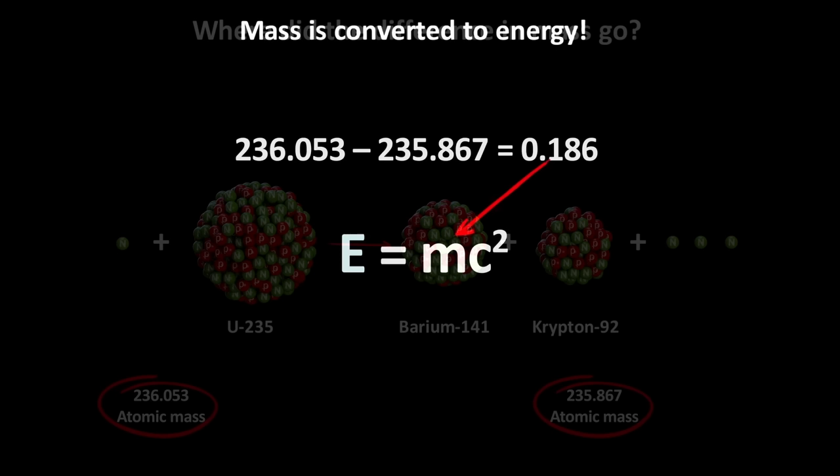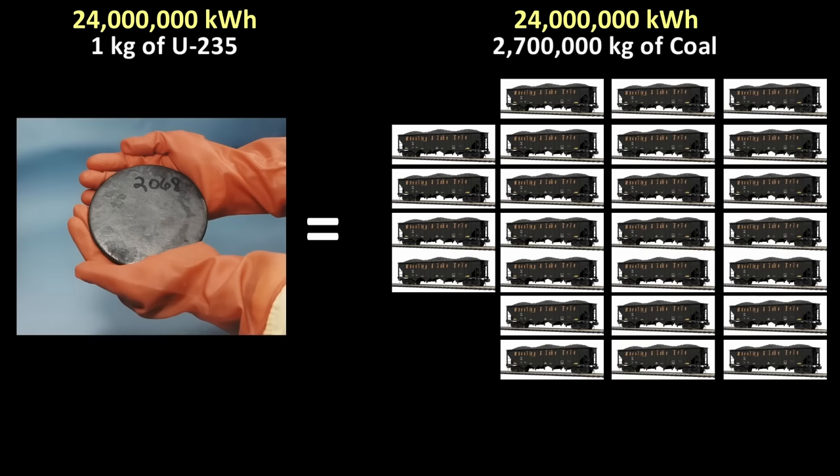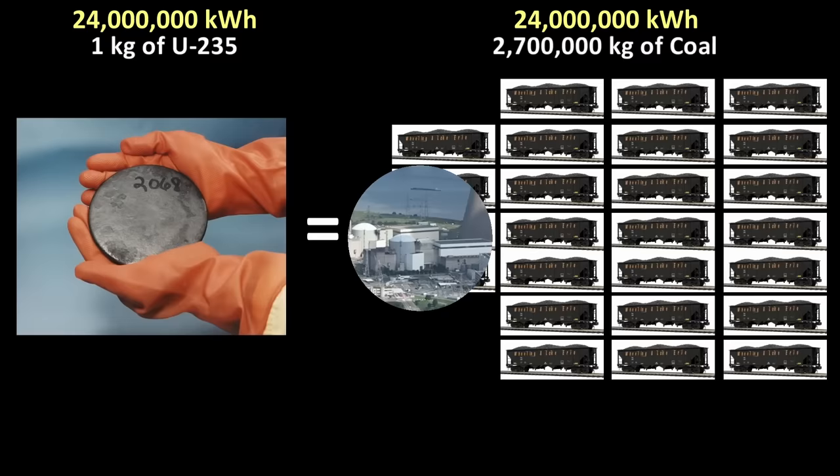The mass difference is actually tiny, but the amount of energy released is huge because as shown in this equation, the mass is multiplied by the speed of light squared, which is a huge number. This is essentially why nuclear power plants can generate an incredible amount of energy with very little fuel. To give you some numbers, one kilogram of coal produces around 8 kilowatt hours of energy, whereas one kilogram of uranium-235 produces a whopping 24 million kilowatt hours of energy.